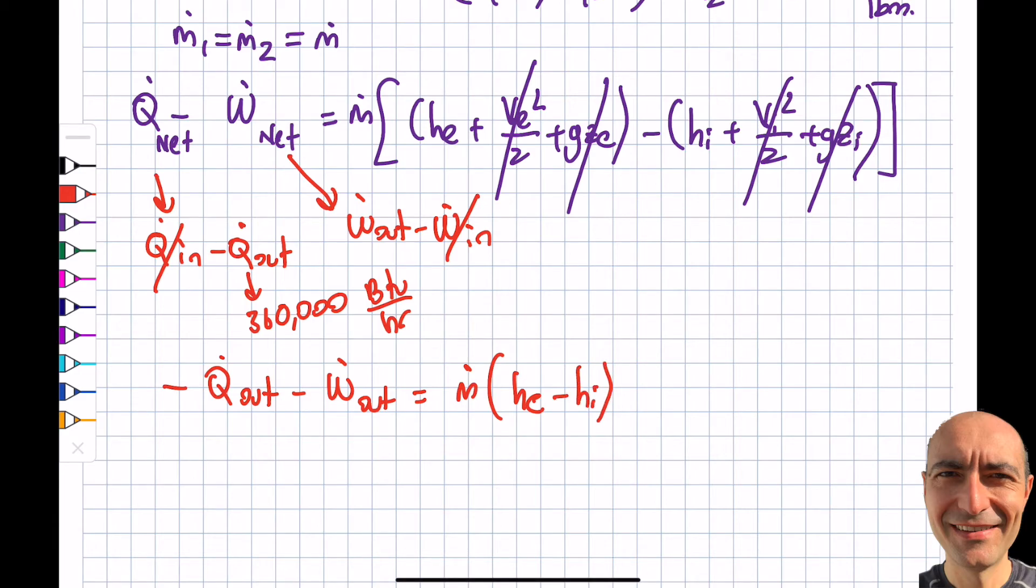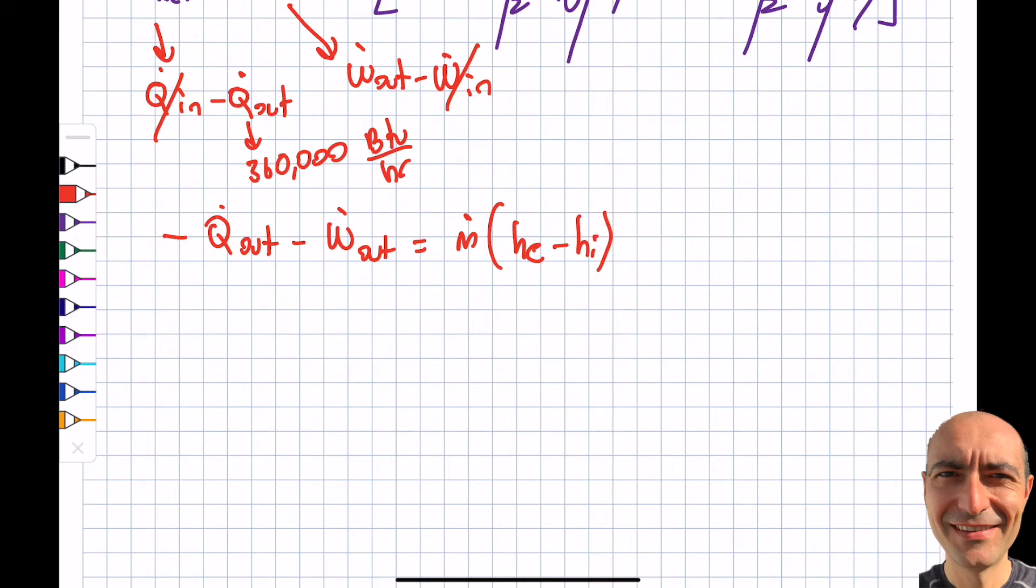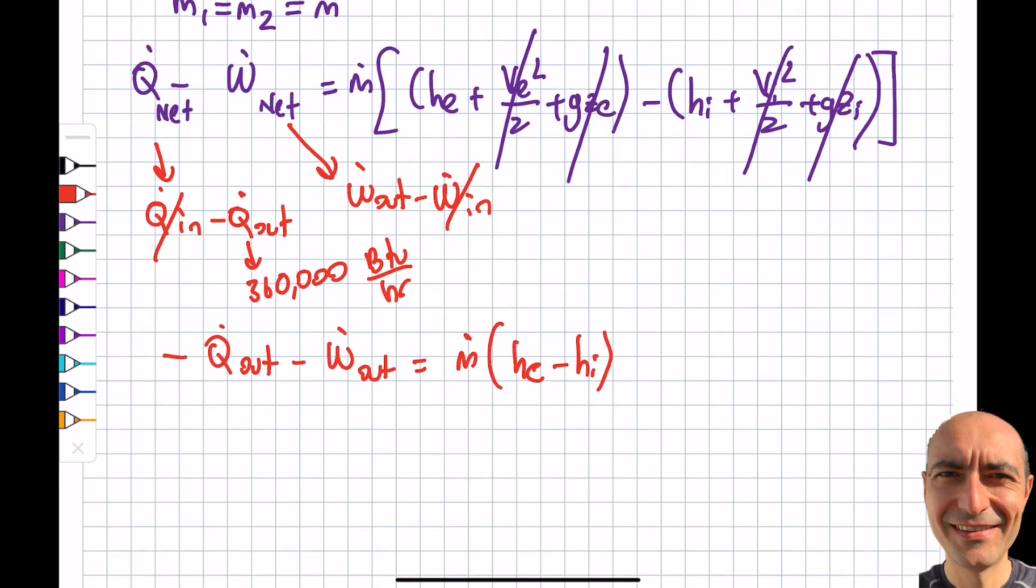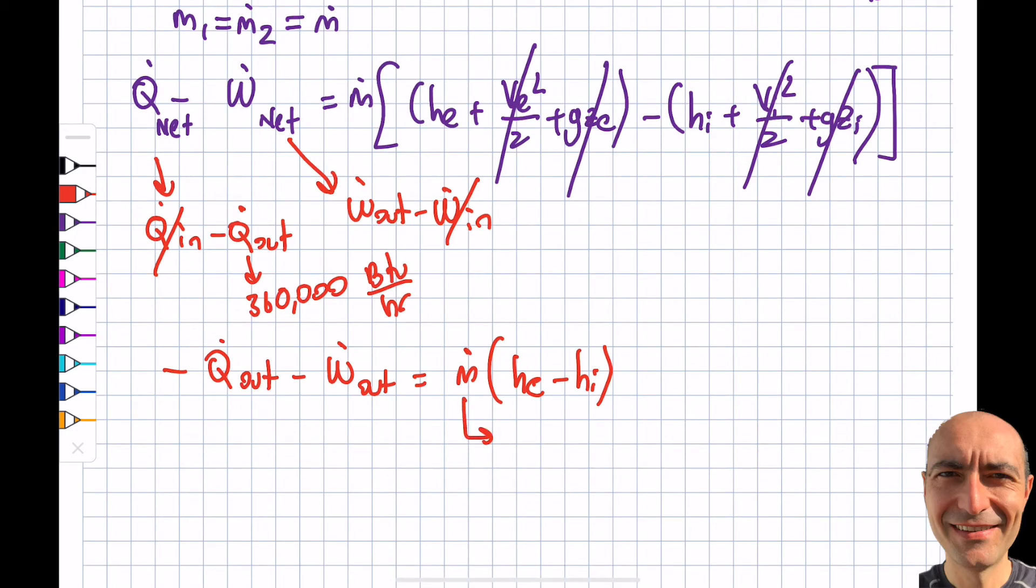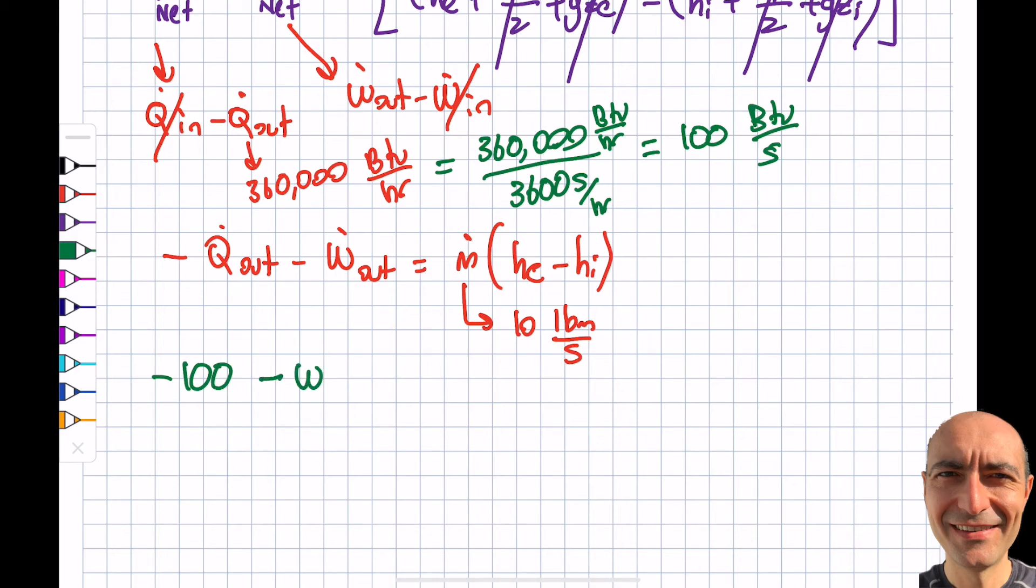If I write that now, I'm going to get -Q̇out - Ẇout equals ṁ(hexit - hinlet). Let's look at this Q̇out. I'm going to highlight something. You're looking at the ṁ value given to me as 10 lbm/s, so we have to do some kind of conversion because this is in hours and this is in seconds. I'm going to convert everything to seconds to be consistent. Q̇out: you divide 360,000 by 3600 seconds per hour, so I get 100 Btu/s.